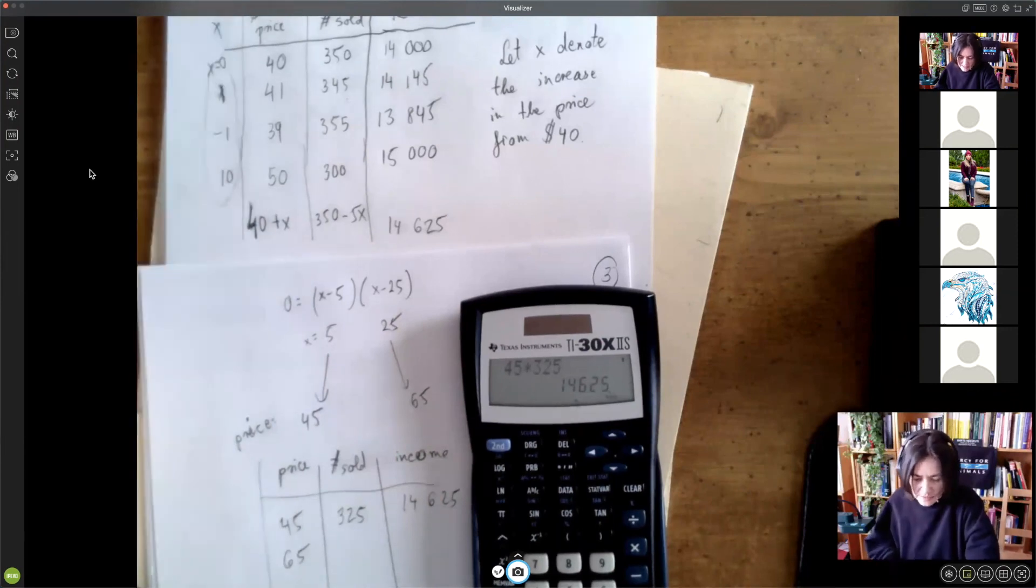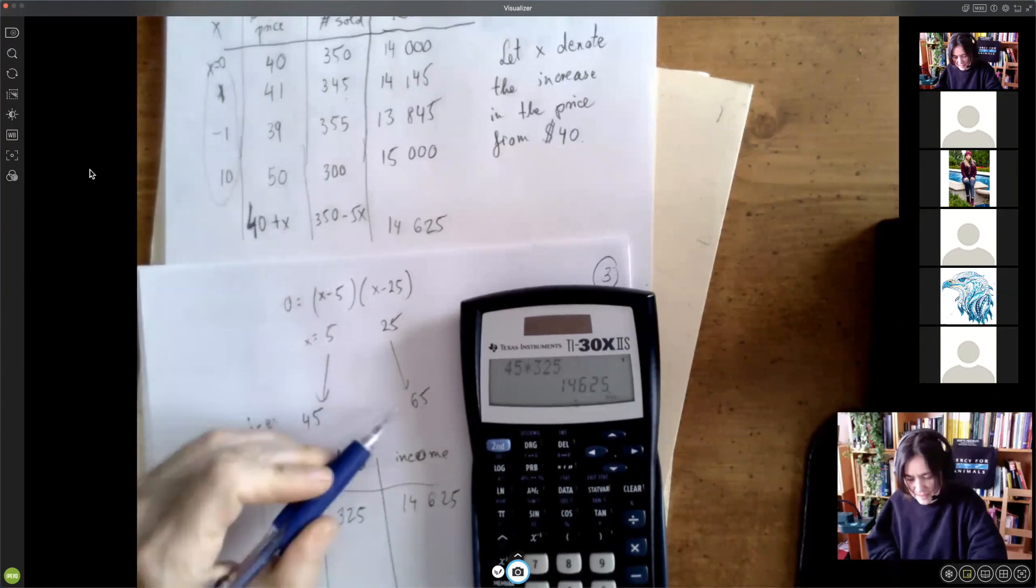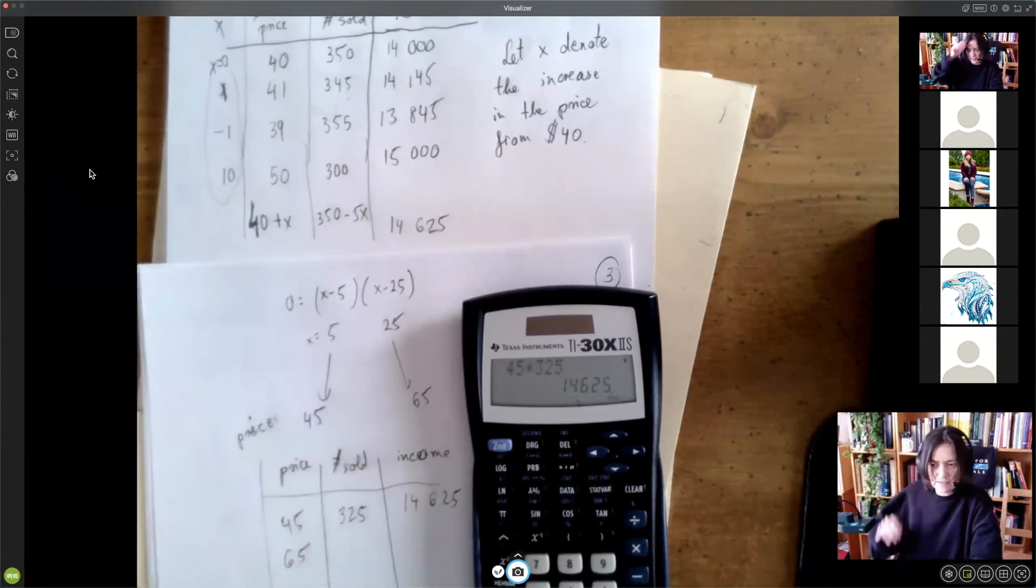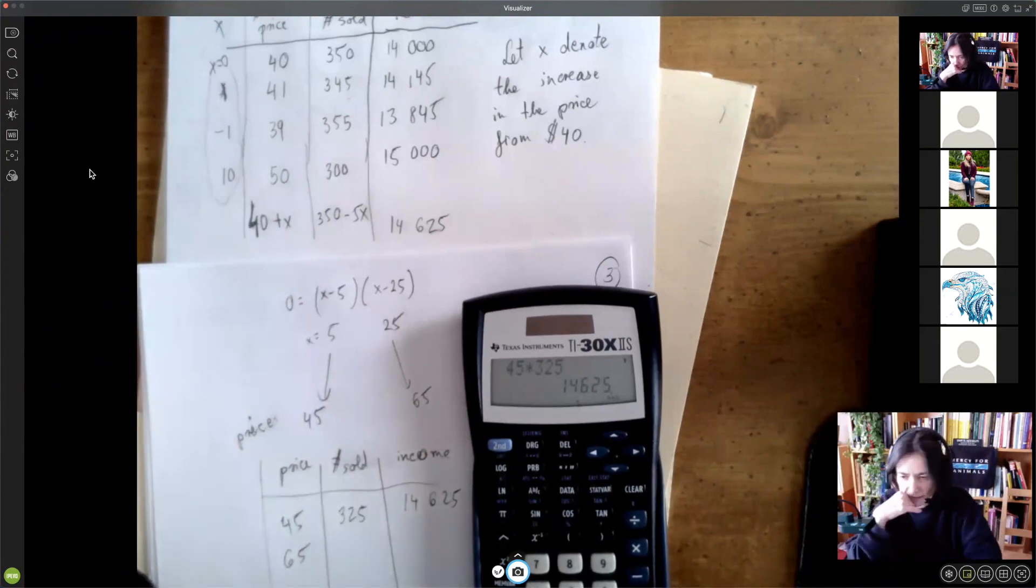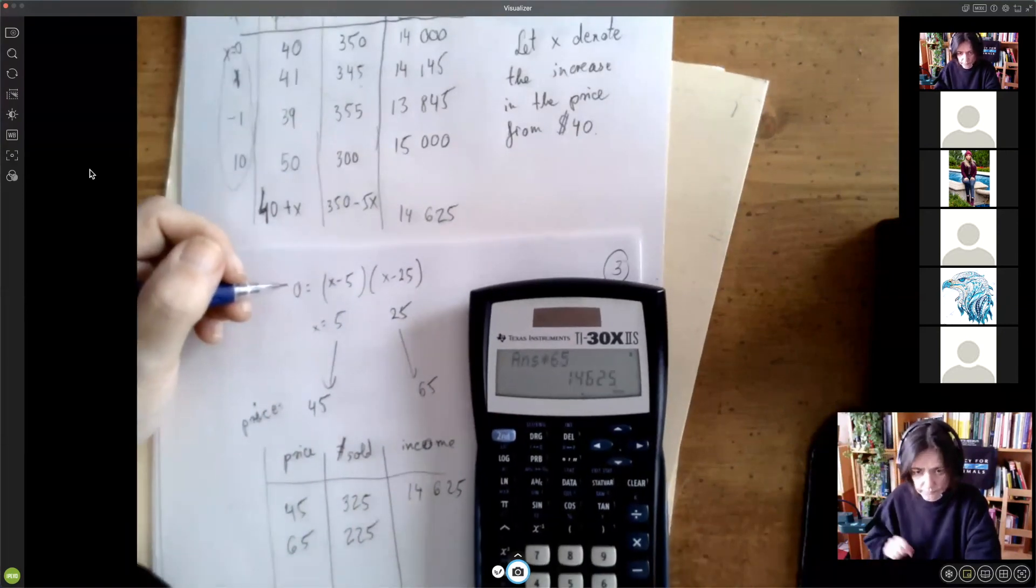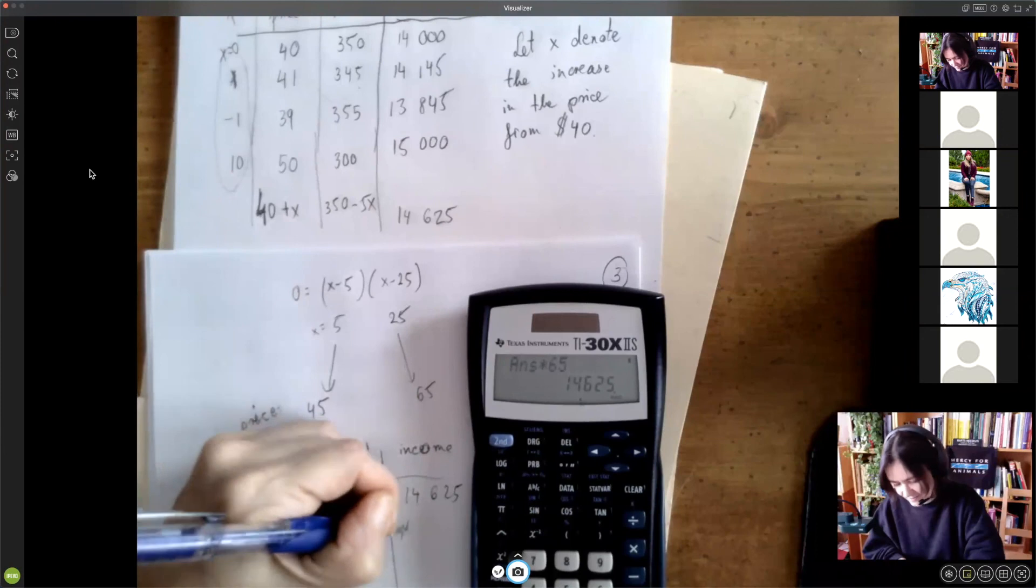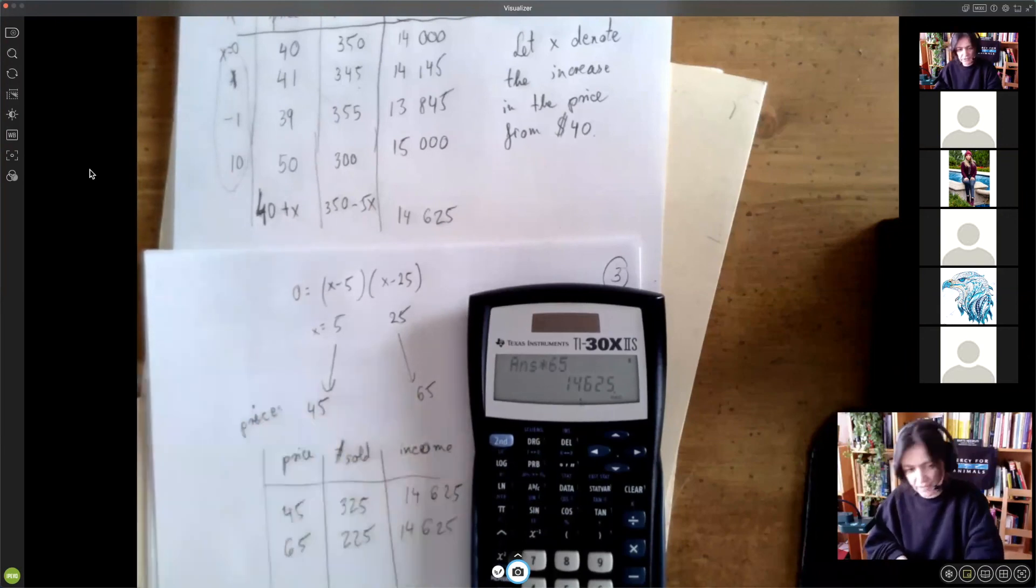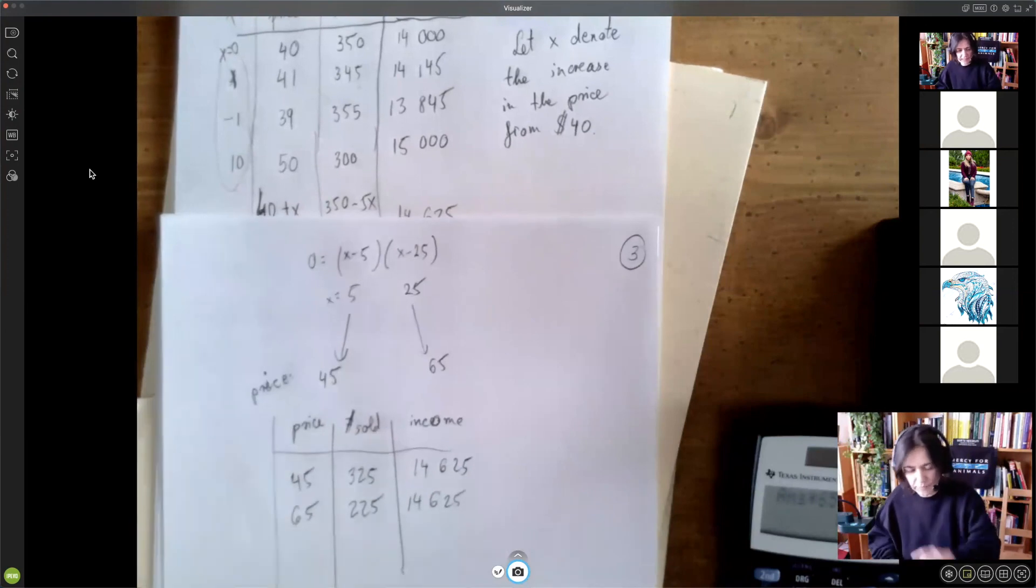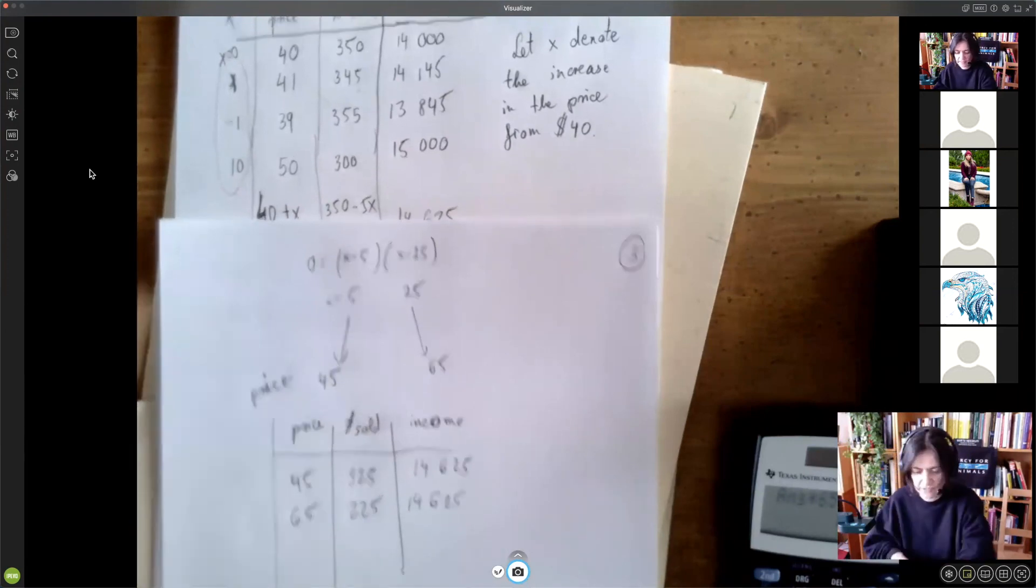And then if we raise the price to $65, then the price is bigger, but we're going to sell only, X is 25, we lost that many times five tickets. So how many are we going to be able to sell? There it is. So they both work. Both prices work. So that's how you do that one.